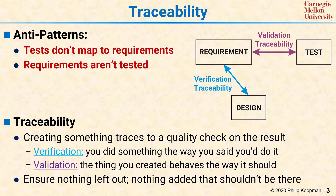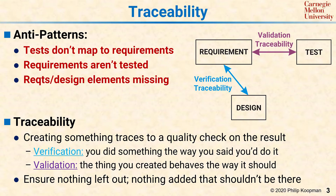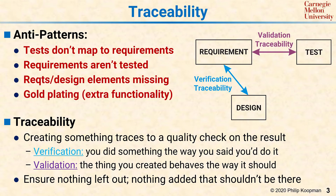You might have requirements that aren't tested — you see a requirement, but there's no test, so how do you know it actually got done? There might be design elements or requirements that are just missing, and you find that by asking: how come in my design there's nothing that corresponds to the requirement above it? And you might have gold-plating — a feature that's not supposed to be there. If there's no requirement, why is that feature there?